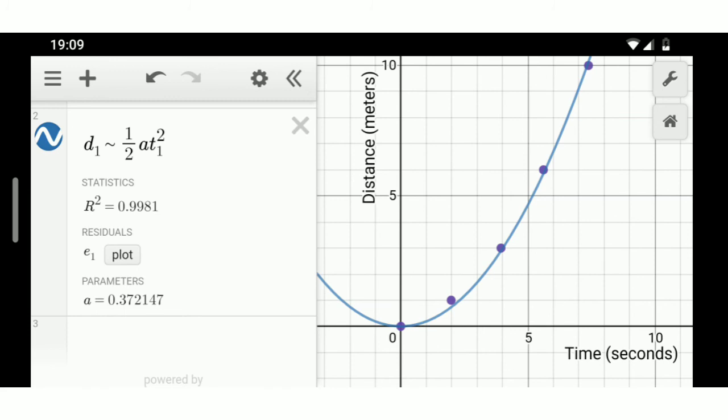One might be tempted to think that a is the slope. But a is not the slope in this particular case. The slope would be the slope of the curve, and that's changing. The slope is not a constant. So that's a different matter. But the a is the acceleration, but it is not the slope.